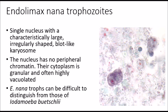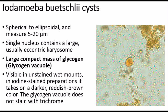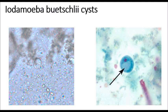Iotamoeba bushleyi: the cysts are spherical and measure about 5 to 20 microns. It has a single nucleus containing a large, usually eccentric karyosome. The key characteristic is a large, compact, massive glycogen vacuole. In an unstained wet mount it's still visible. In an iodine stain preparation it takes on a darker reddish-brown color; however, the glycogen vacuole does not stain with a trichrome stain. On the left you can see the cyst in an unstained wet mount with the glycogen vacuole clearly visible, and on the right is a trichrome-stained cyst where the glycogen vacuole does not stain at all.